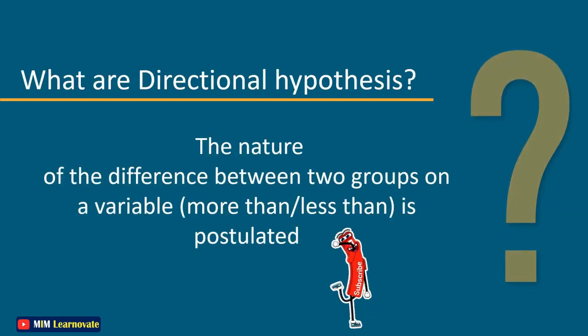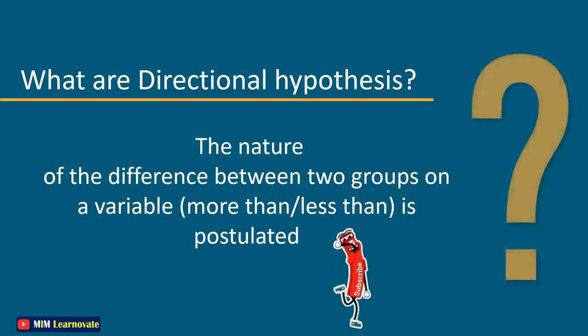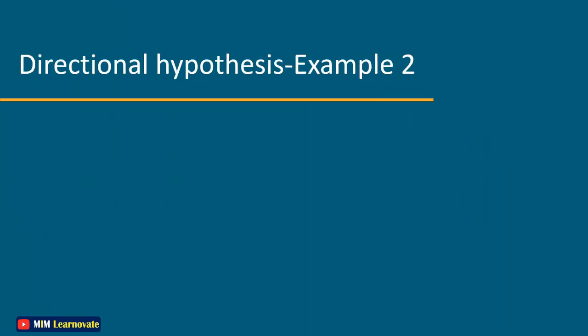Directional hypothesis can also be defined as the nature of the difference between two groups on a variable, where more than or less than is indicated. Directional hypothesis example 2: